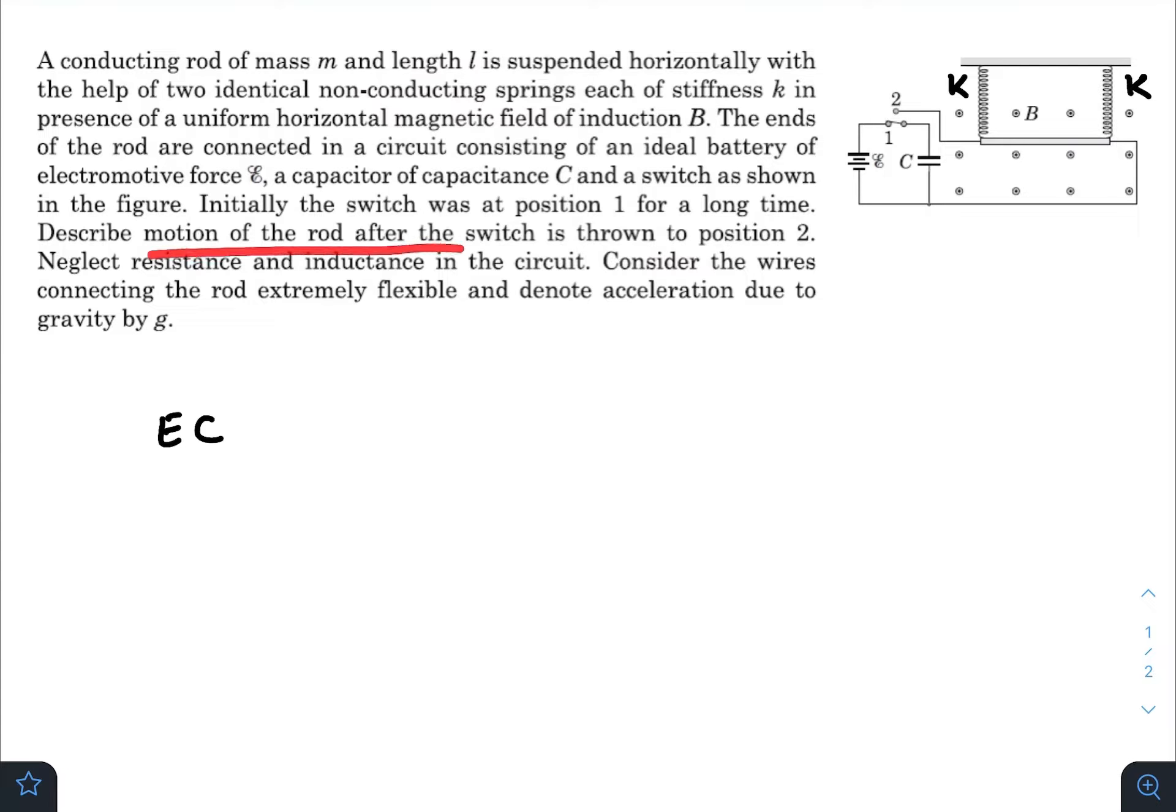Describe the motion of the rod after the switch is thrown to position 2. Neglect resistance and inductance in the circuit, consider the wires connecting the rod are extremely flexible. Initially the capacitor was charged and after that the switch is thrown to point 2.